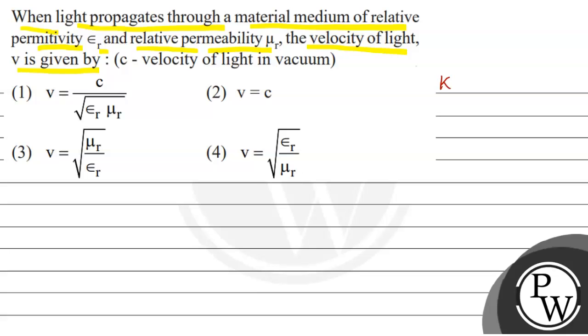Let's discuss the concept. It's very basic: if light is traveling in vacuum, then in that condition, velocity of light c equals 1 upon root of mu_0 epsilon_0.